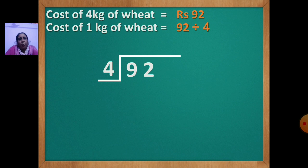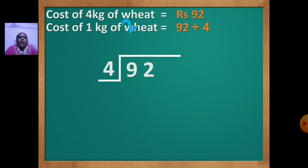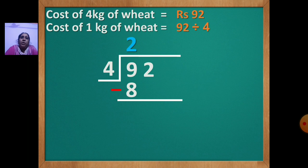Now we are going to start the sum. You have to take one number at a time. We will take 9 first. Which number is less than 9 in the table of 4? 4 ones are 4, 4 twos are 8. So 8 is smaller than 9. You will write 2 up as the quotient and 8 down. Now draw the line, put the sign of minus, and do subtraction. 9 minus 8 is 1.